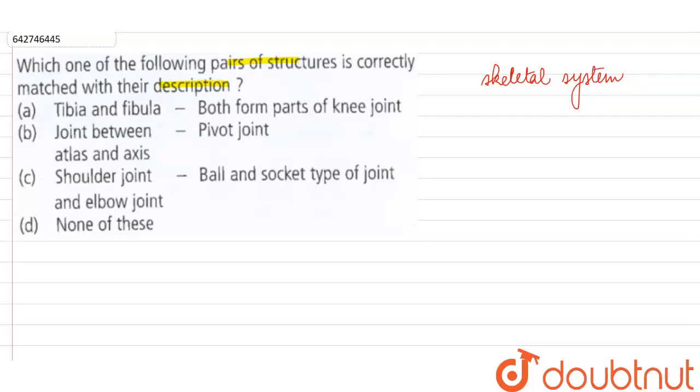Tibia and fibula are the bones which make up our lower leg or the shank, and here they are saying that they both form a part of the knee joint. So what do we mean by knee joint?